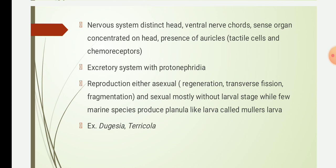The excretory system consists of protonephridia with flame cells. In freshwater forms, this is mainly a way to get rid of excess water. Excretion of metabolic waste is carried out by the body wall. The excretory system is reduced or absent in marine forms.